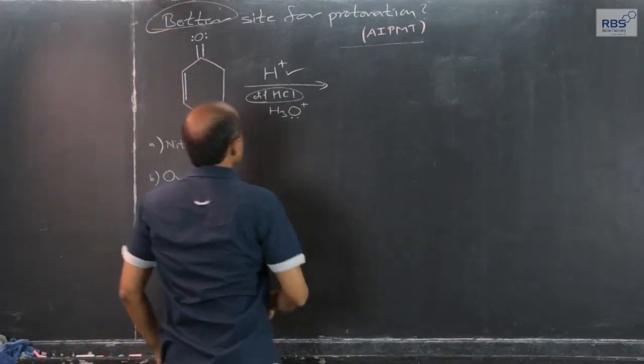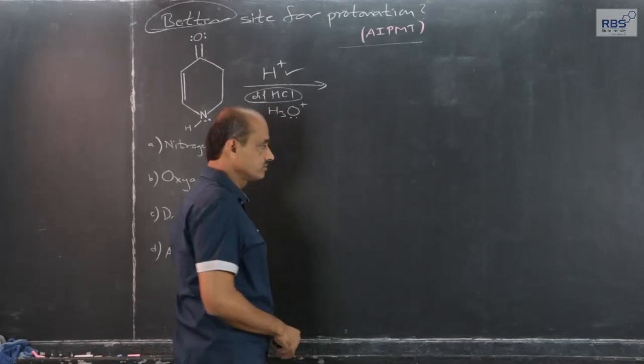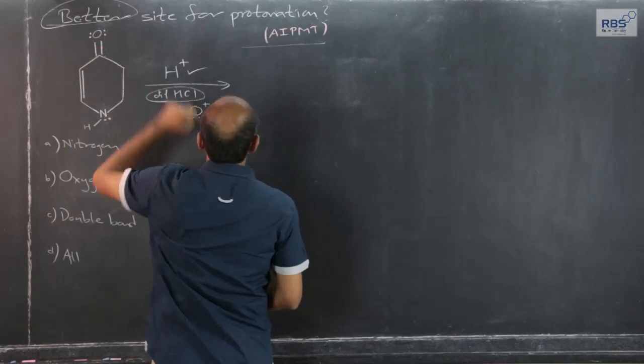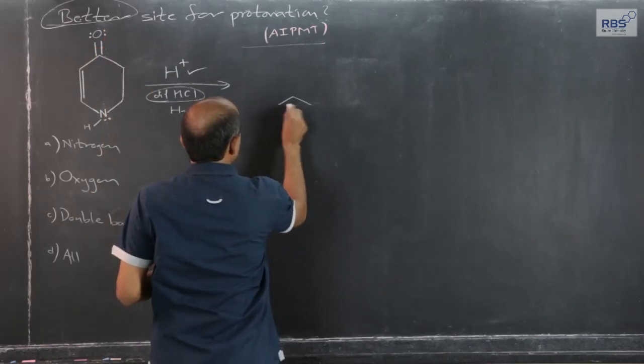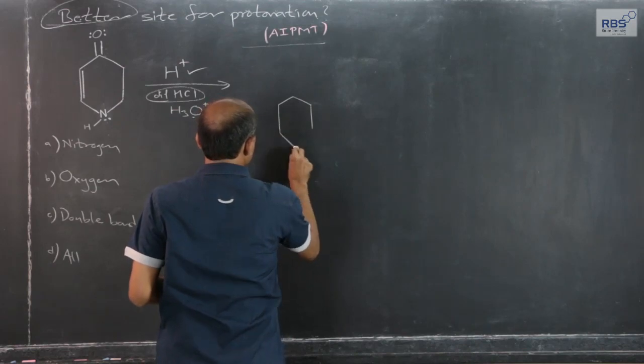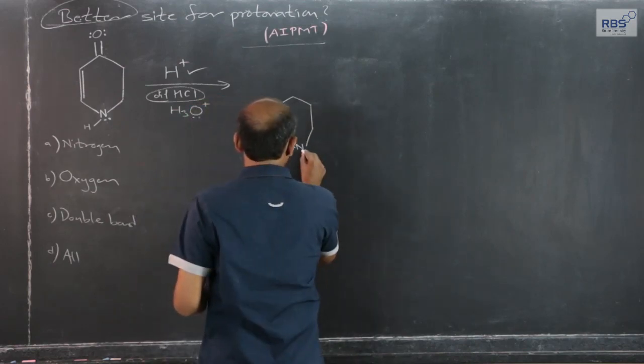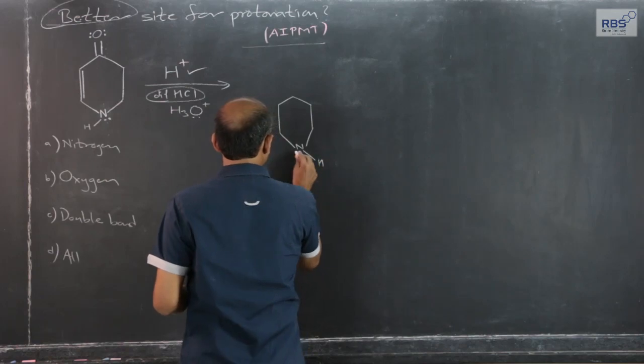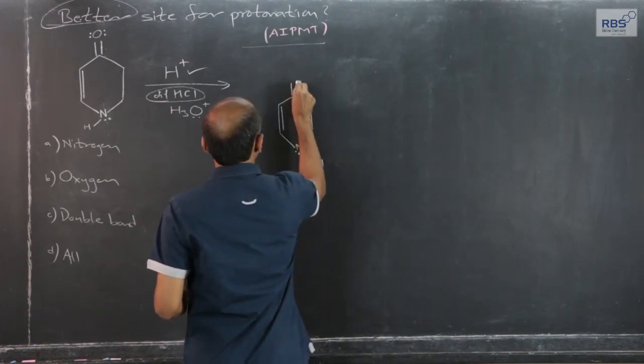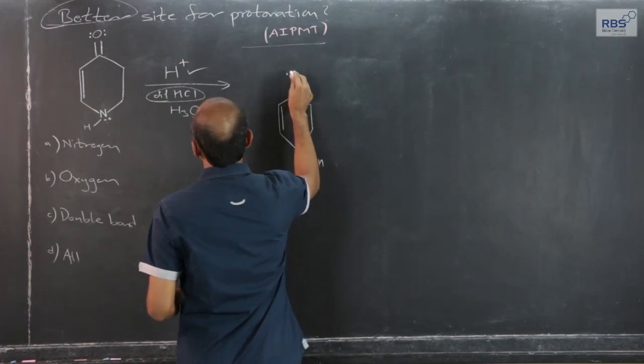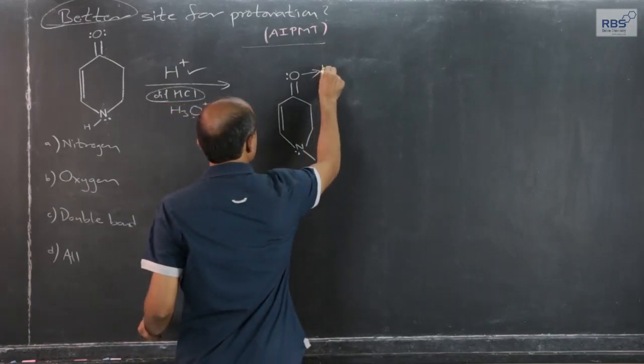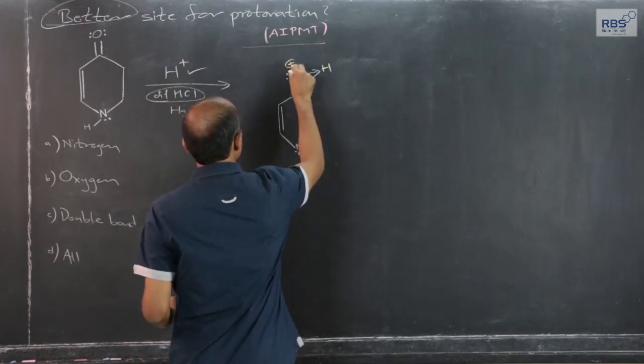If protonation takes place at this oxygen, means H+ from acid and out of two lone pairs, one lone pair takes part. What we get is this: hydrogen, lone pair, pi, out of two one lone pair, and H+ from mineral acid protonation. Protonation, and therefore positive charge here.